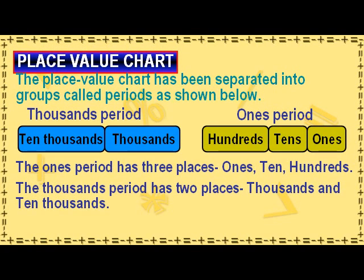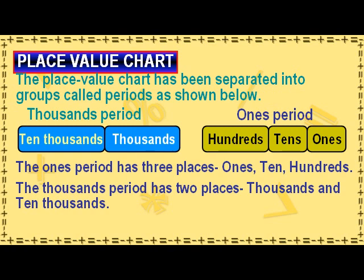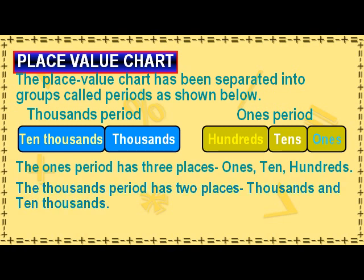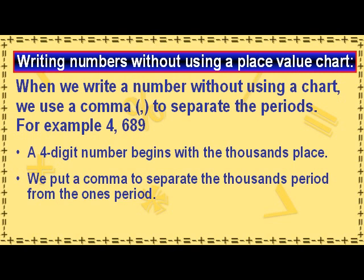Place value chart. The place value chart has been separated into groups called periods. The thousands period contains ten thousands and thousands. The ones period contains hundreds, tens, and ones. The ones period has three places: ones, tens, hundreds. The thousands period has two places: thousands and ten thousands.